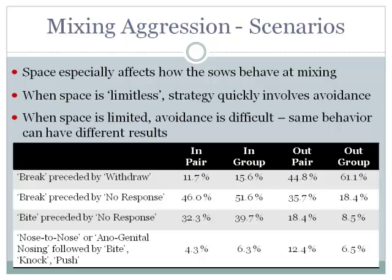With 'no response' — where one pig just ignores the other — interactions can also break. This works fairly similarly across environments. But sometimes no response has very different outcomes: outdoors, the other pig might still bite you around 18% of the time. Indoors, ignoring the situation — like an ostrich putting its head in the sand — is much more likely to be followed by a bite, significantly more than randomly expected.